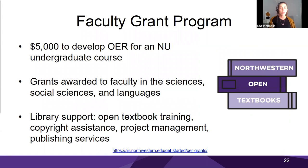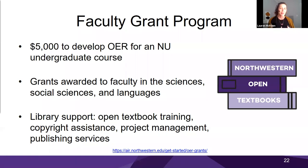Here at Northwestern, we have a faculty grant program that happens once per year. We give multiple $5,000 grants to develop open educational resources for a Northwestern undergraduate course. Grants have been awarded to faculty in the sciences, social sciences, and languages. In addition to the $5,000 — which can be taken as a stipend, spent on student workers, or spent on printing — we offer library support in the form of open textbook training, copyright assistance, project management, and publishing services.